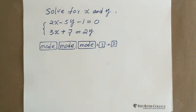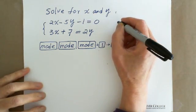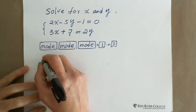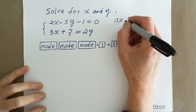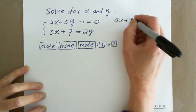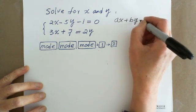When using scientific calculus to solve system of linear equations, you need to write equations in standard form. The standard form is AX plus BY equals C.